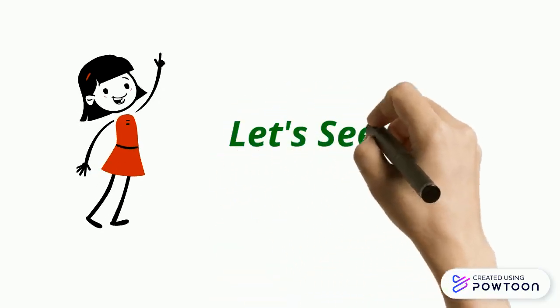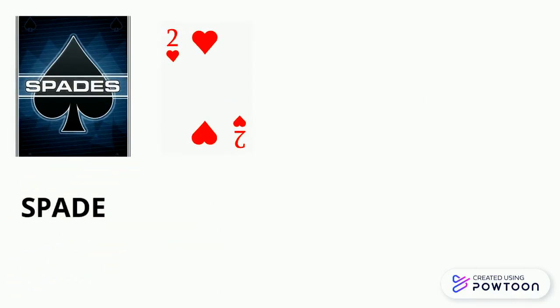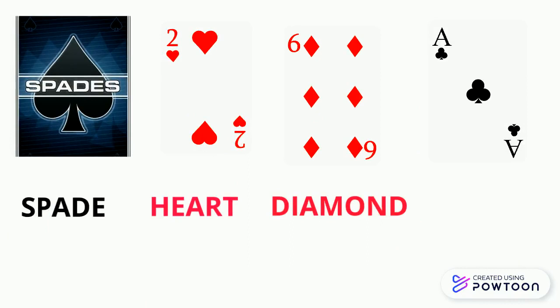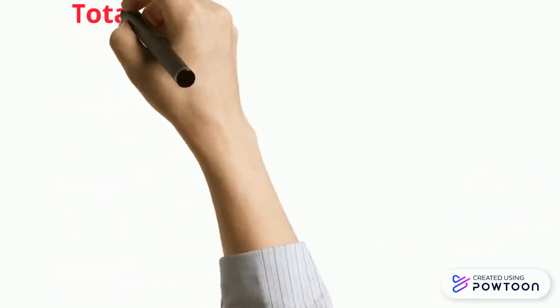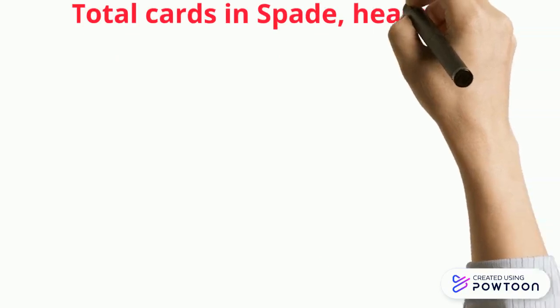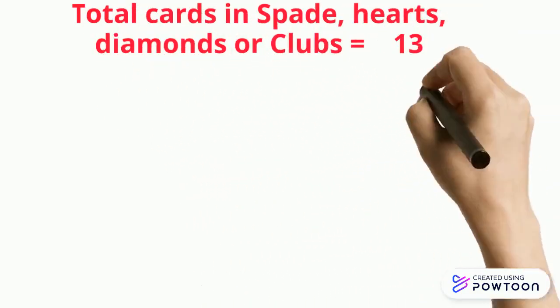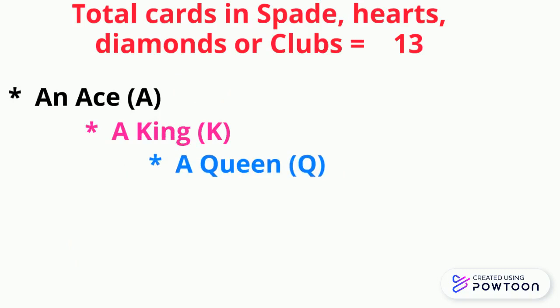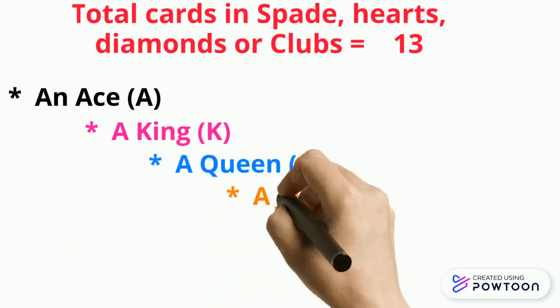Here we see how the cards of spade, heart, diamond and club look like. In all 4 suits — spades, hearts, diamonds and clubs — the total cards are 13 each, out of which one is an ace, one is king, one is queen and one is jack.